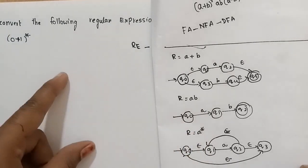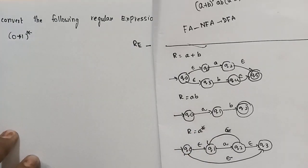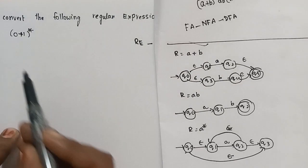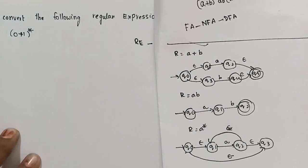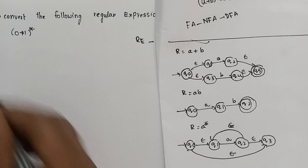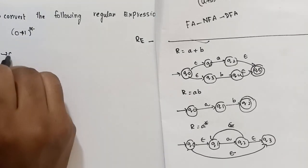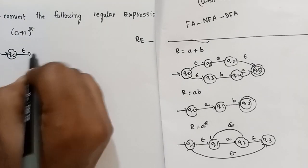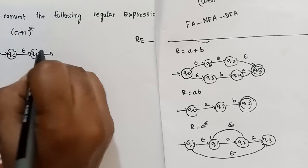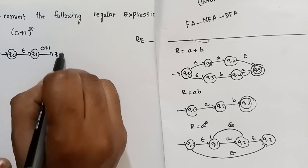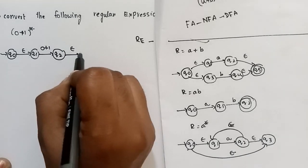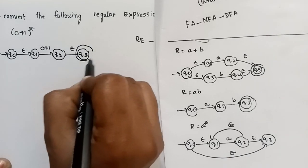We can convert to basic rotations. The problem is 0 plus 1 star. If you want to use a star formula, we can apply the star formula. The star formula gives us: Q0 on epsilon goes to Q1, Q1 on 0 plus 1 goes to Q2, Q2 on epsilon goes to Q3. Q3 is the final state.